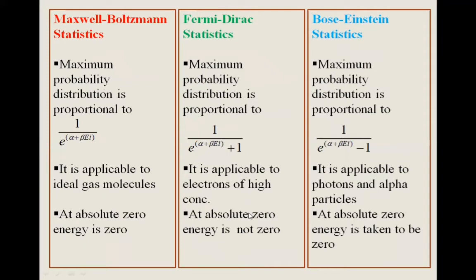In MB statistics, the most probable probability distribution is proportional to 1 / e^(α + βεᵢ). In Fermi-Dirac statistics, it is proportional to 1 / (e^(α + βεᵢ) + 1). In Bose-Einstein statistics, it is proportional to 1 / (e^(α + βεᵢ) − 1).